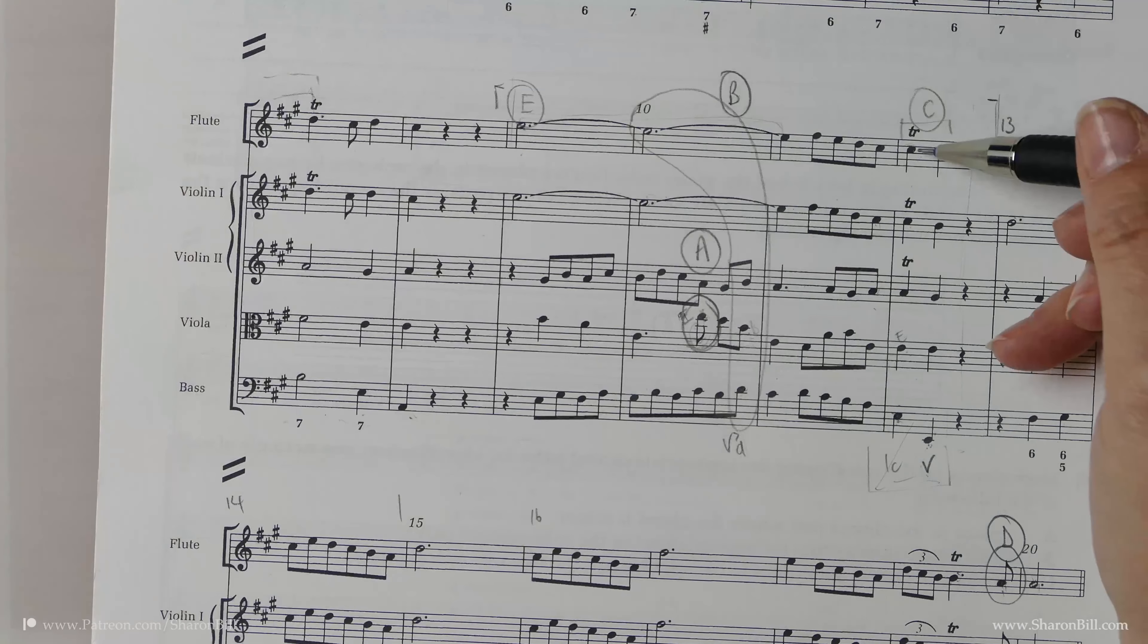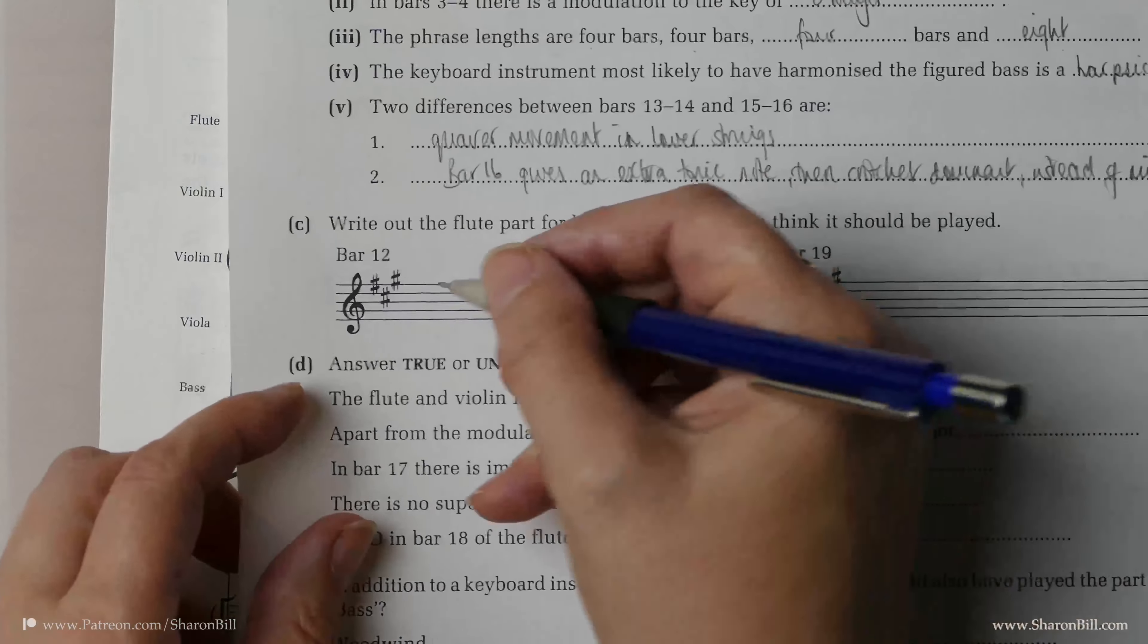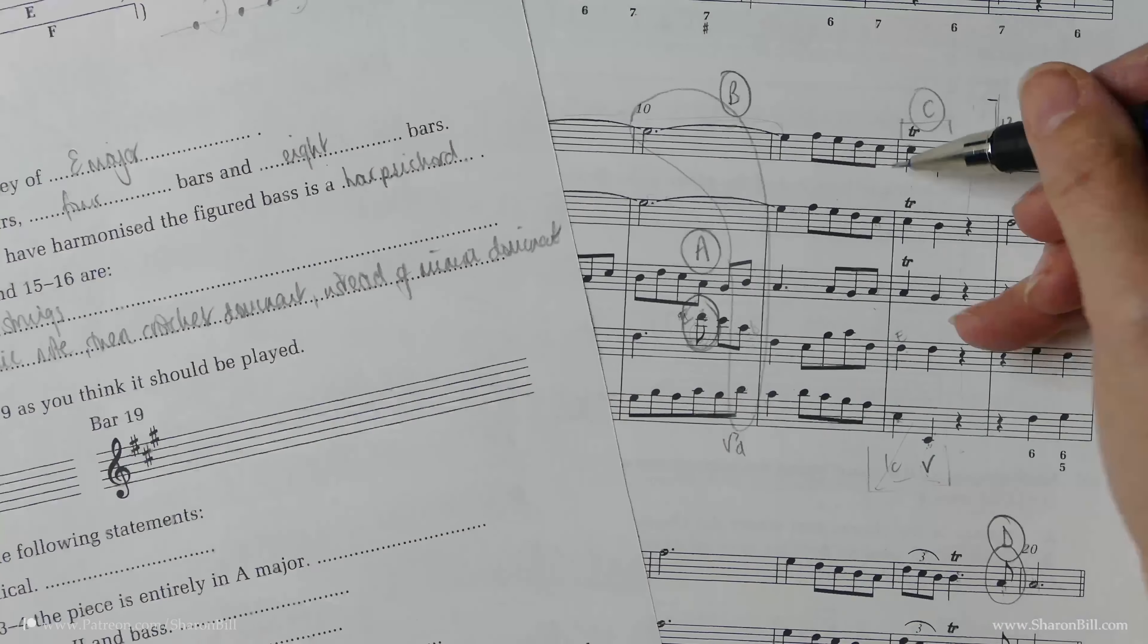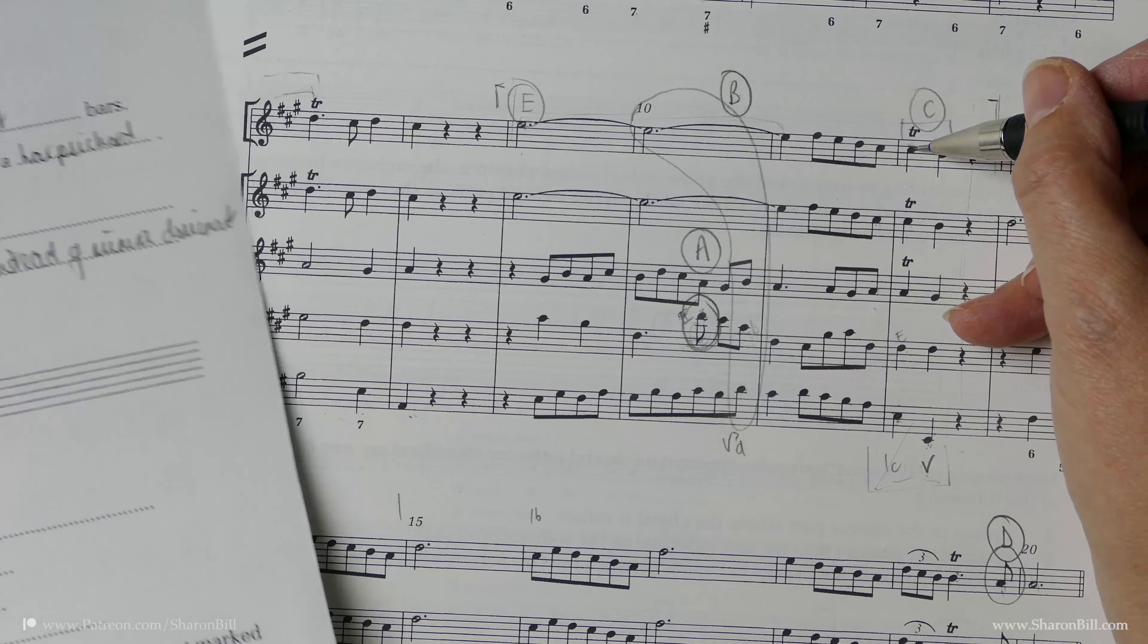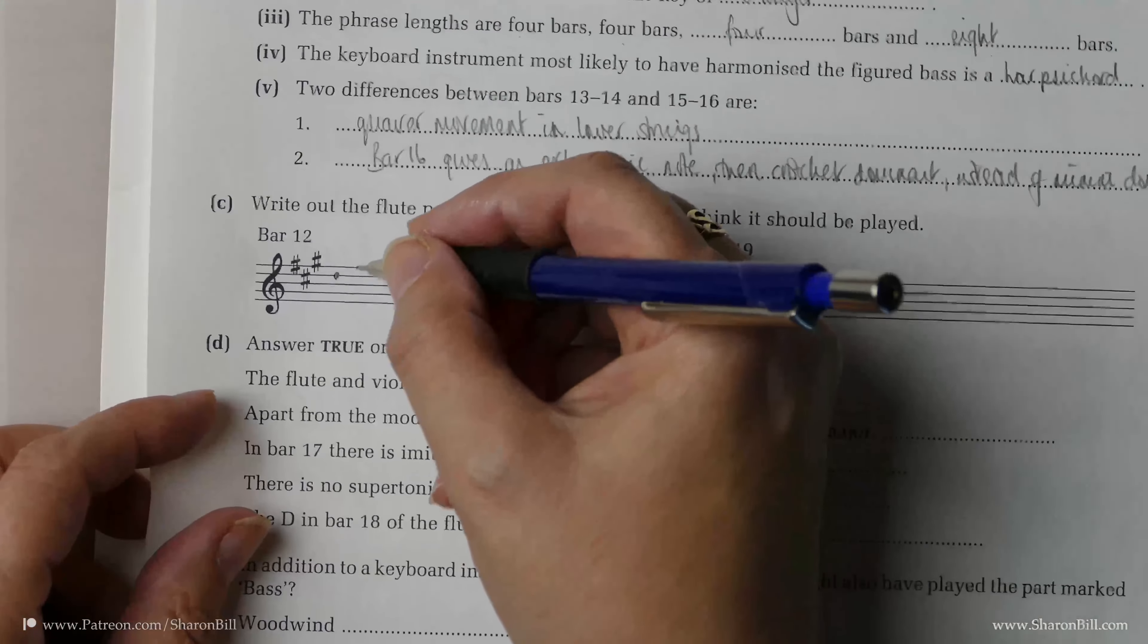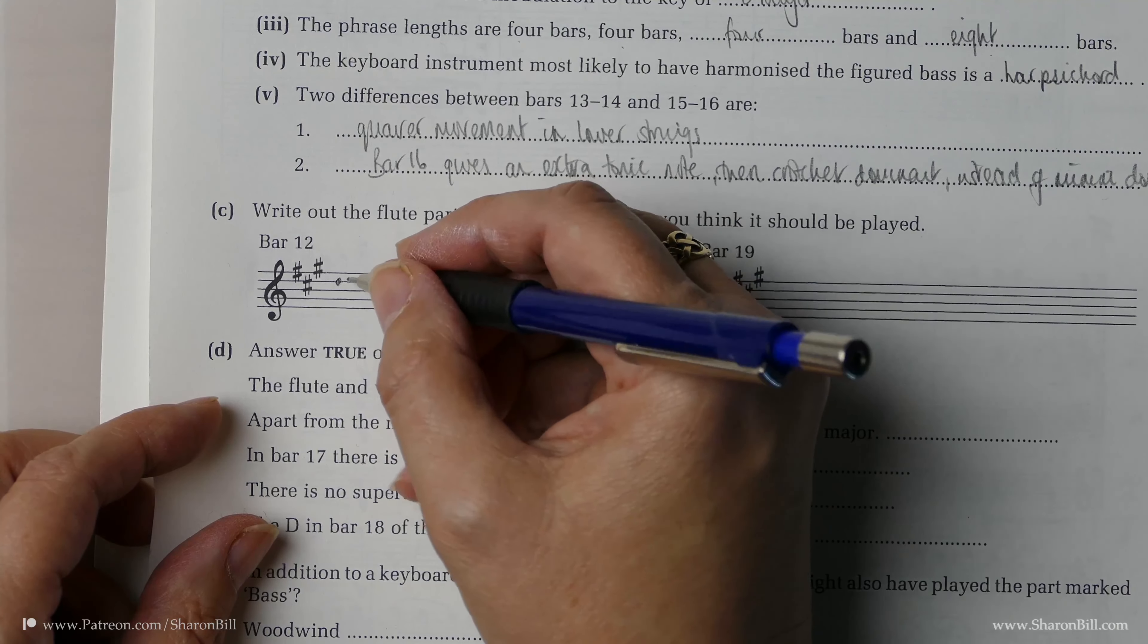So the trill will begin on the D. We've got a crotchet to fill, so mathematically it's going to have to work out. If we have two groups of demi-semis, four demi-semis make a quaver. So that would be quaver, quaver. If we have two little groups, D, C sharp, D, C sharp.